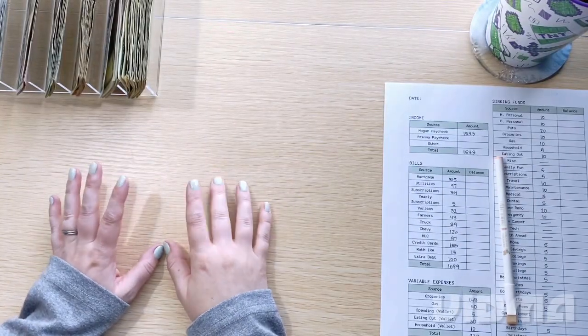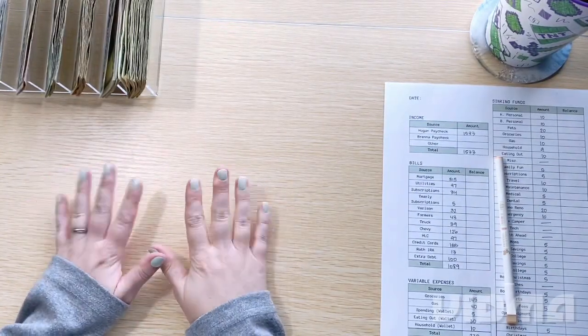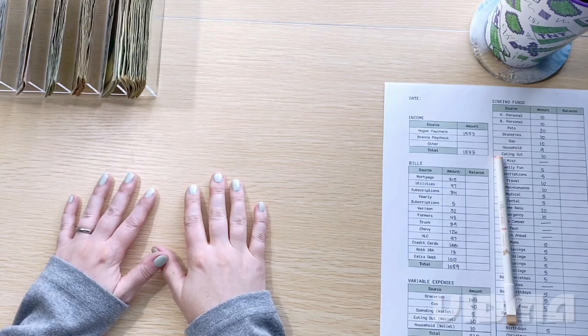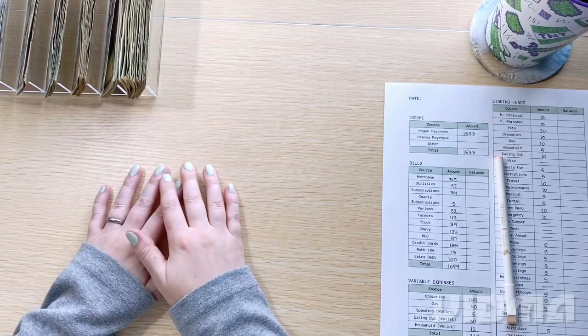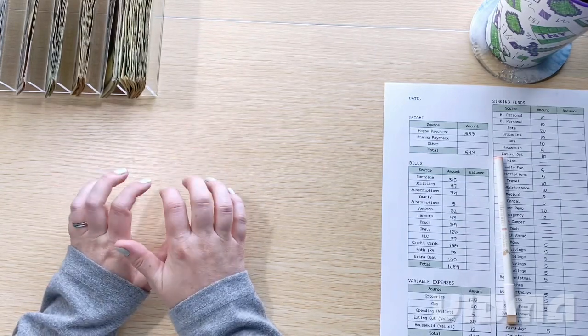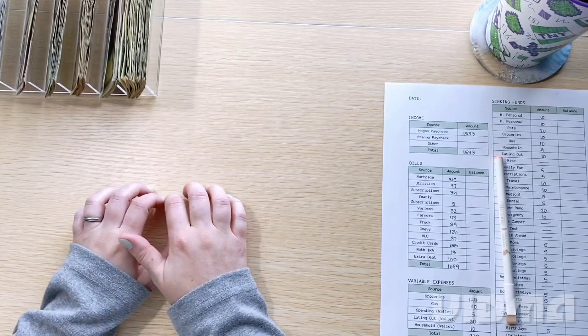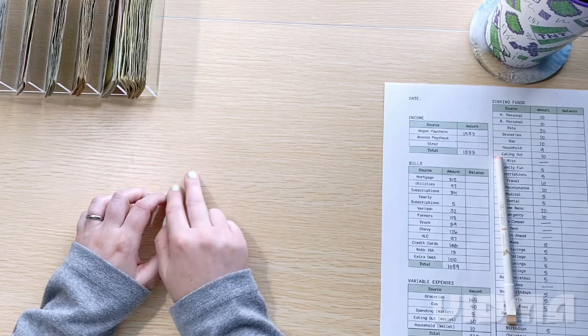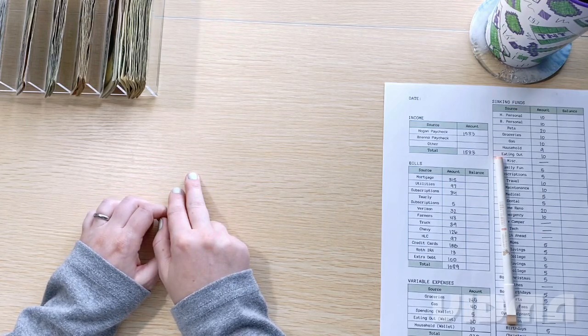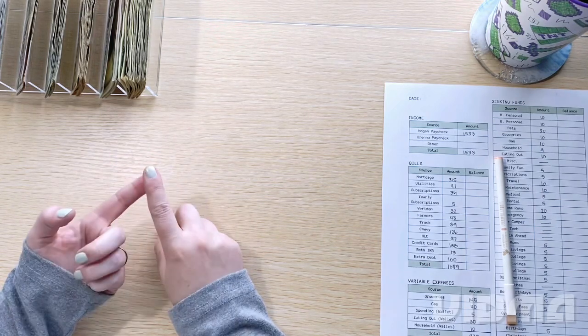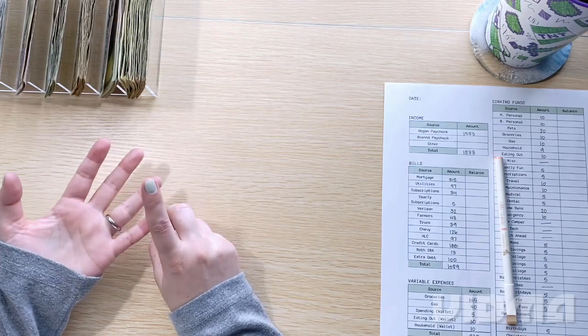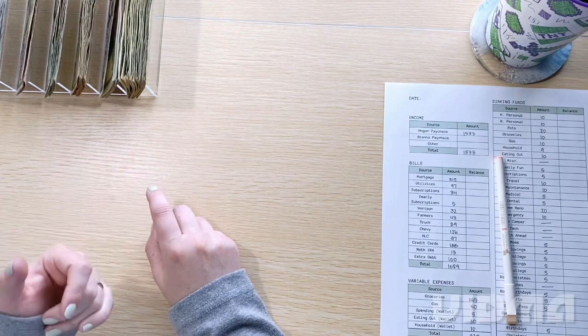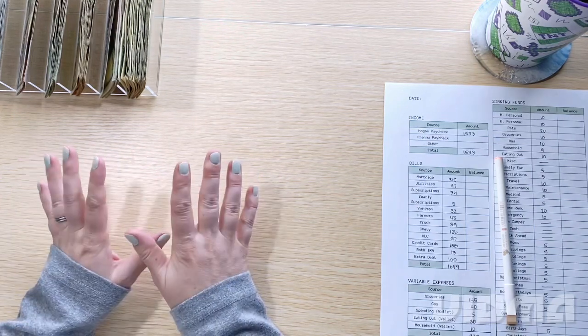Hey everybody, welcome back to Strapped for Cash. My name is Brenna. I'm a 34-year-old cash stuffer and budgeter and today we are going to stuff my husband's paycheck, his second paycheck for the month of April, and we're going to stuff our bills, our sinking funds, and my wallet for the week. So if that interests you, let's go ahead and get into it.